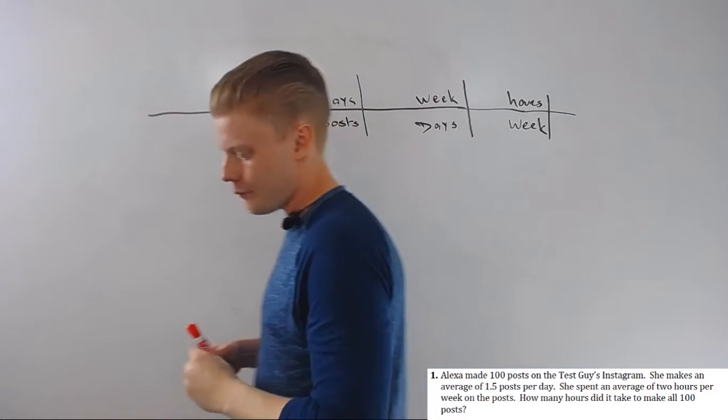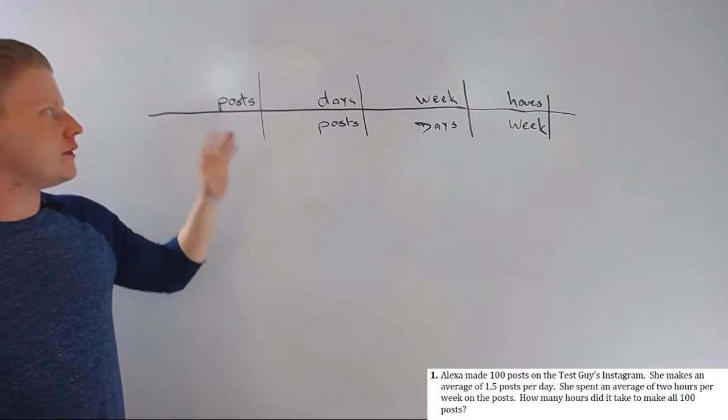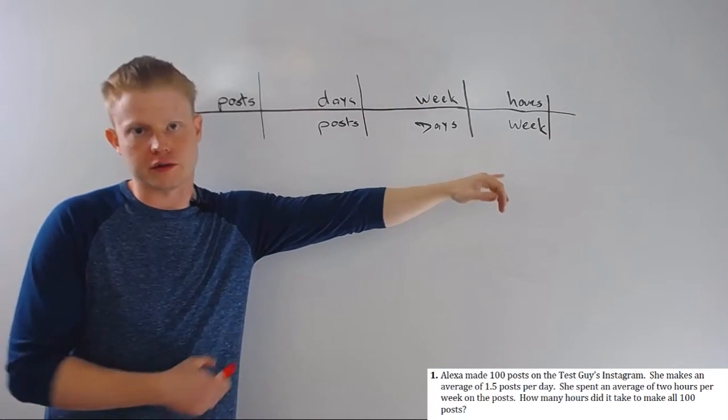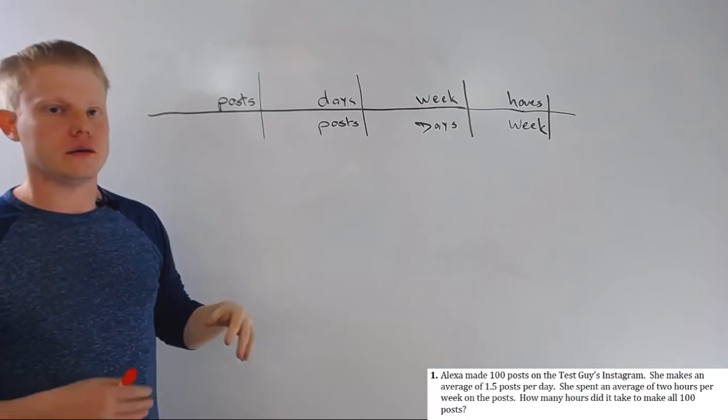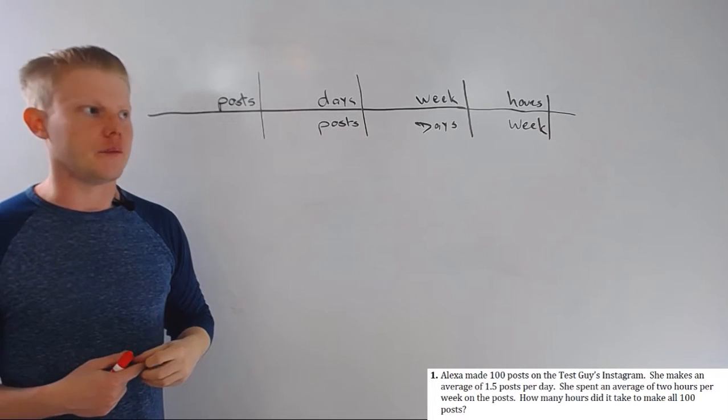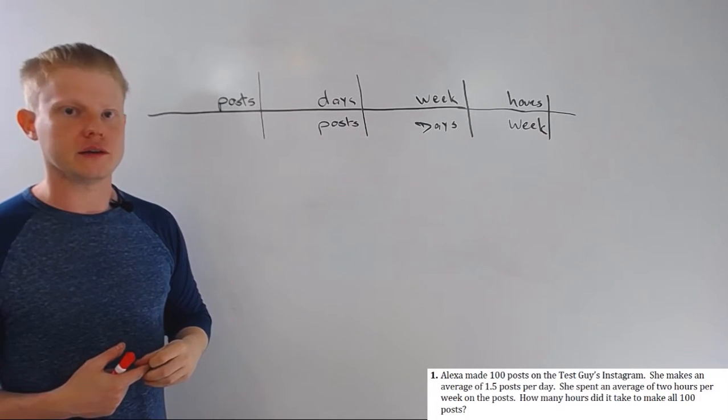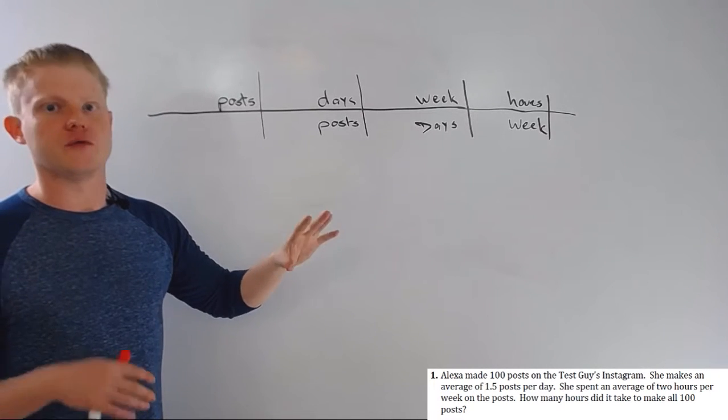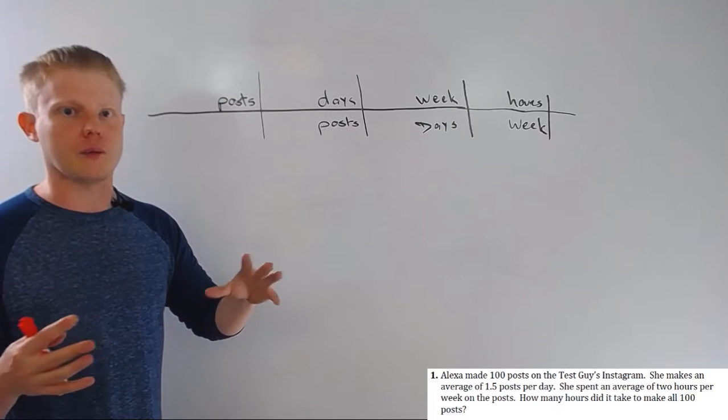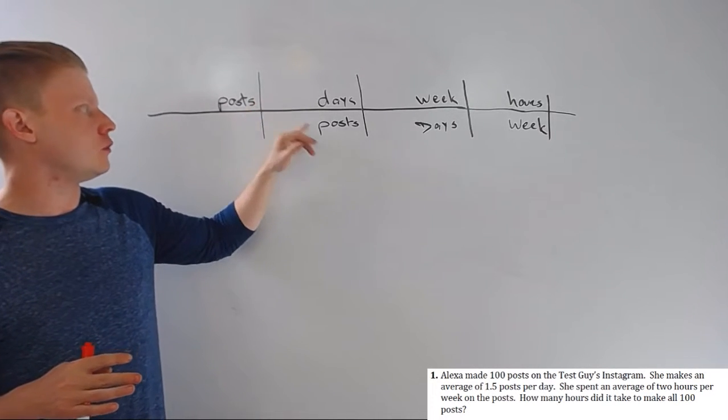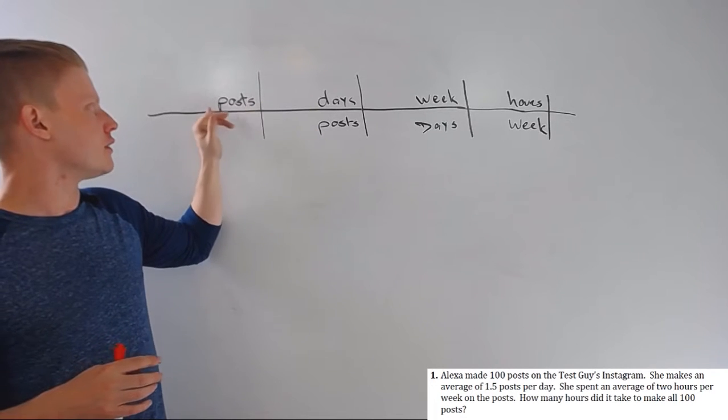Now look what happens. See, the way this works is I multiply straight across, multiply straight across, and then divide. Now you don't really have to do all that and then all that, but that's the way it's classically explained. Just don't flip things around. This method is designed to keep you from flipping things around or messing up what goes with what, because of the way the units cancel. So you can think of this: I'm dividing posts by posts, so the post unit will go away.